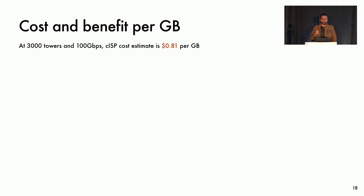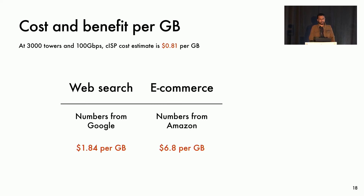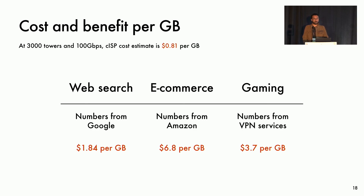Let's see if there are use cases where the value added by CISP exceeds its cost per unit traffic. For the web search industry, we use publicly available volume, revenue, and latency impact numbers from Google. Our back-of-the-envelope estimates indicate that using CISP for web search traffic adds a value of $1.84 per gigabyte, compared to the $0.81 per gigabyte cost of CISP. For the e-commerce industry, we look at similar data published by Amazon — even if we just send 10% of Amazon's retail traffic over CISP, it provides a value of $6 per gigabyte. For the gaming industry, we observe that users pay for low-latency VPN services; CISP provides a benefit which gamers will value at $3.7 per gigabyte. These are rough estimates, but they show that there is financial value associated with low latency, and there is indeed a case to be made for CISP.